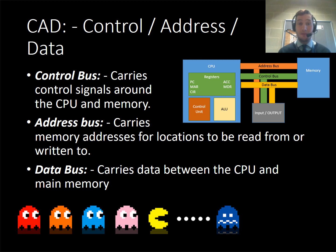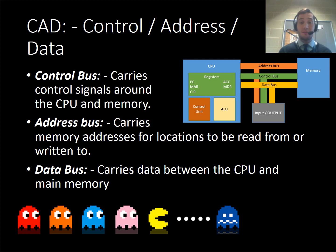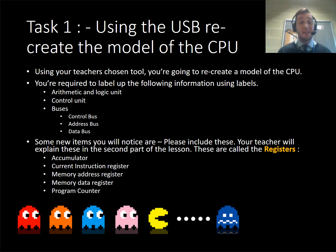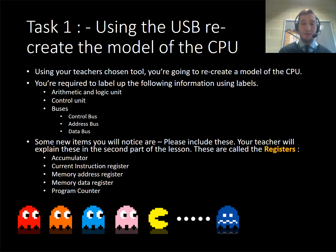The control bus controls the electronic signals around the CPU and memory. The address bus carries the addresses to be read from or written to, and the data bus carries data between the CPU and main memory. I'm going to explain this in more detail shortly when I cover the fetch-decode-execute cycle. At this point in my lesson I had you create and label a model showing what the arithmetic logic unit, control unit, all of the buses, and the registers do — and we'll recap all of that over the next couple of slides.